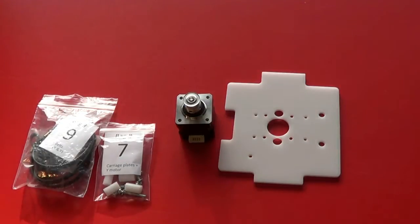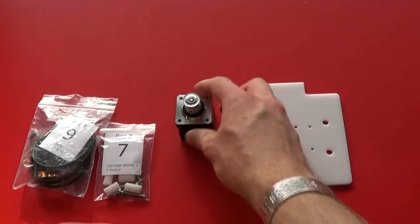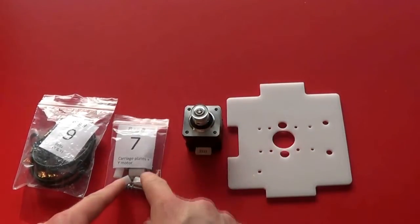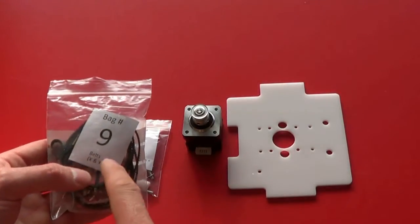We're now going to assemble the remainder of the carriage. So we need to take the carriage top plate, the other stepper motor, bag number 7, and the Y belt from bag number 9.